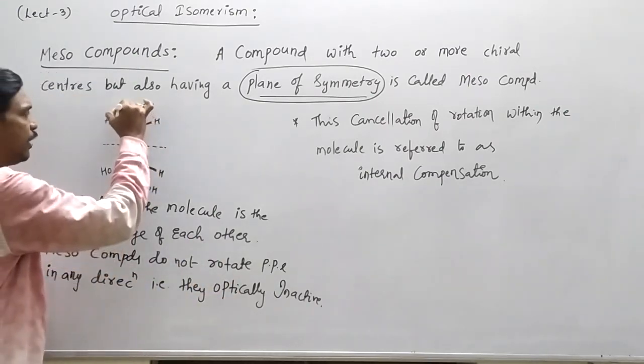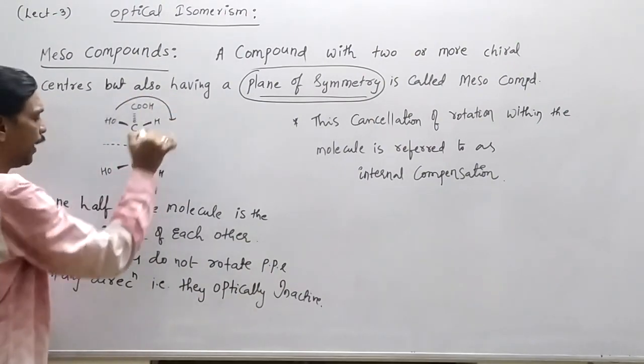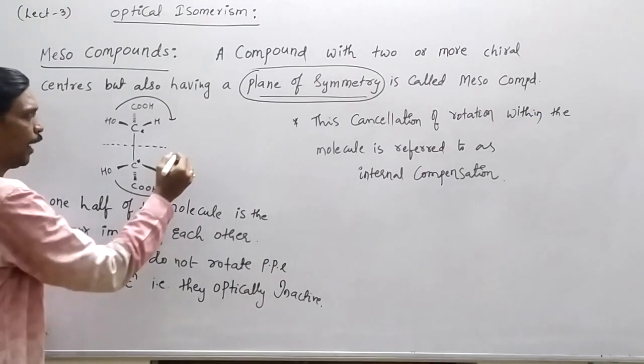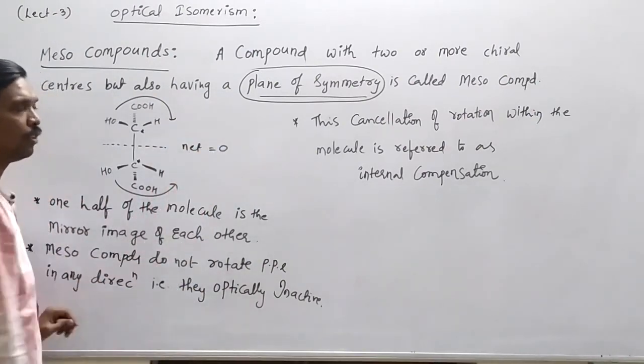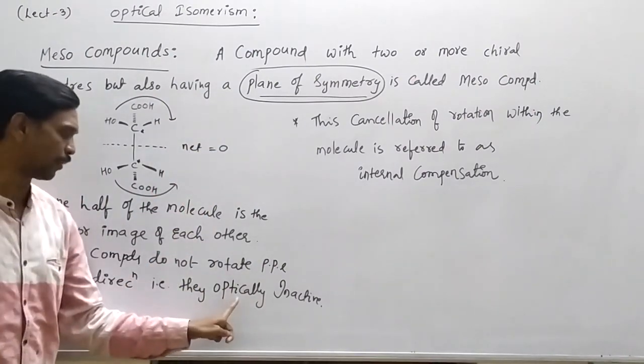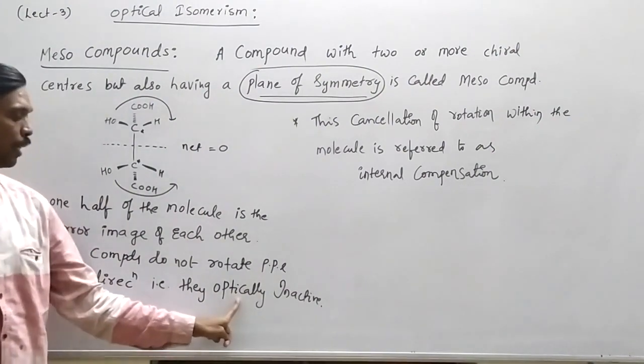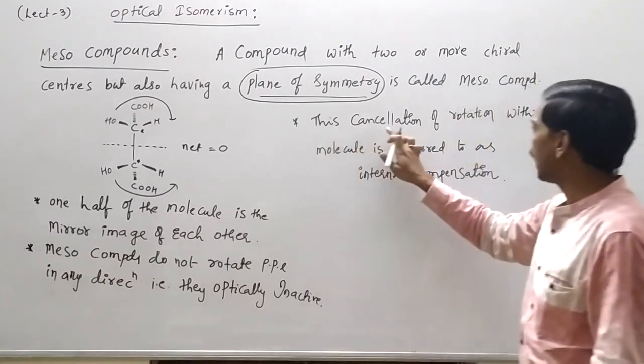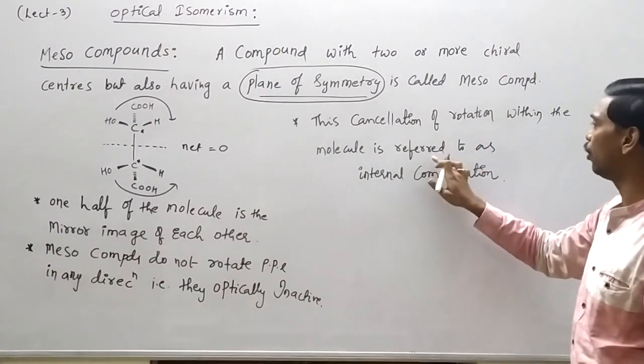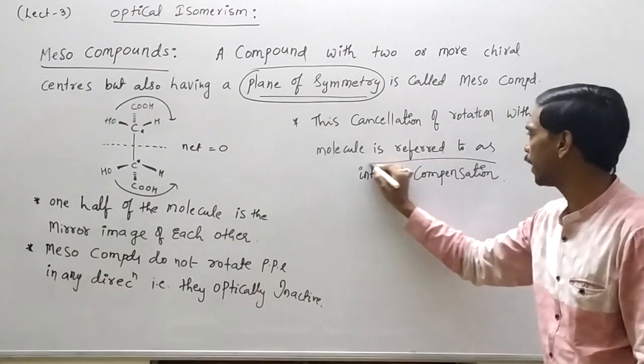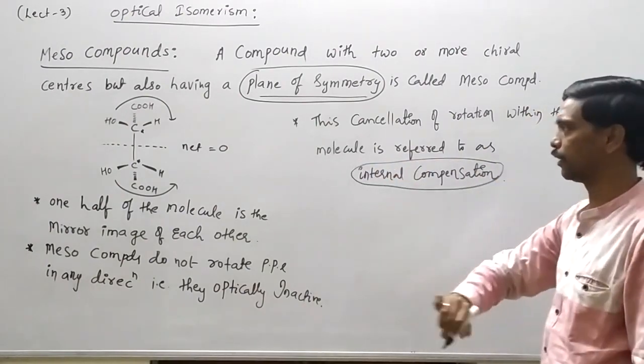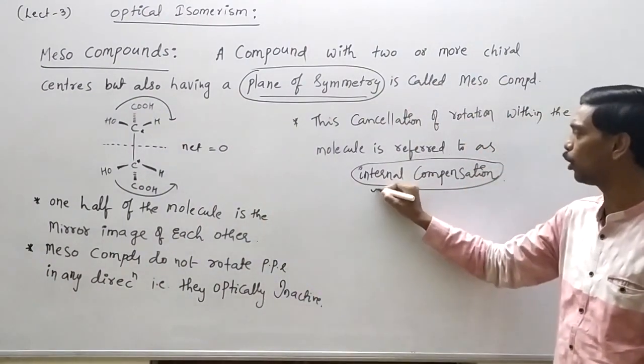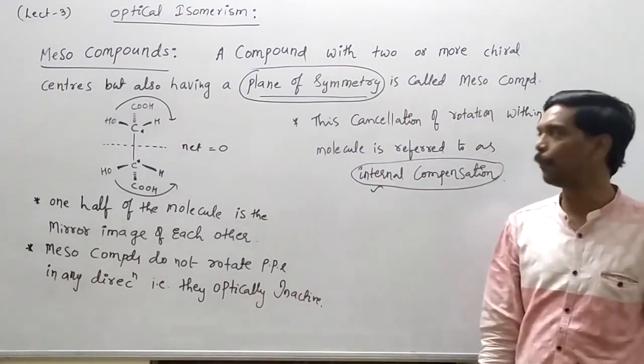That is they are optically inactive. This will rotate individually, this half will rotate individually, but total molecule if taken, so net rotation becomes zero. That's why these compounds are called as optically inactive. And this cancellation of rotation within the molecule is referred to as internal compensation.